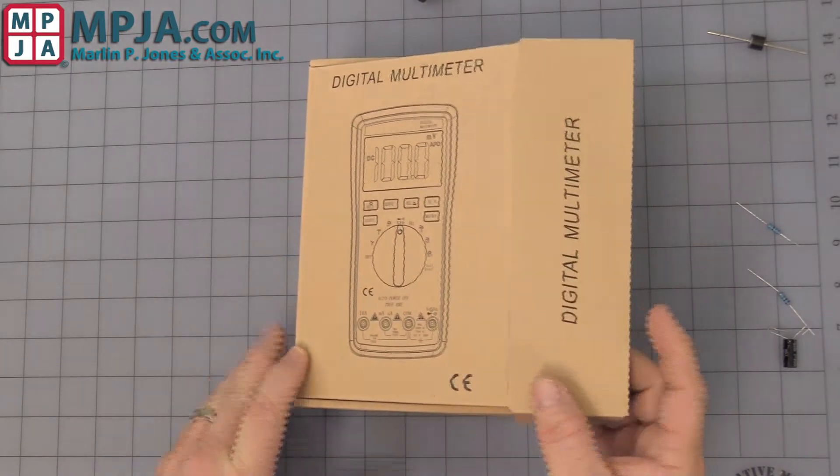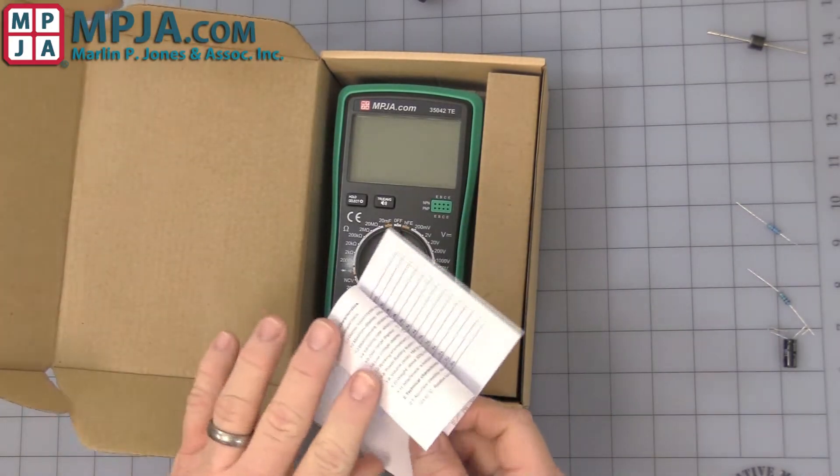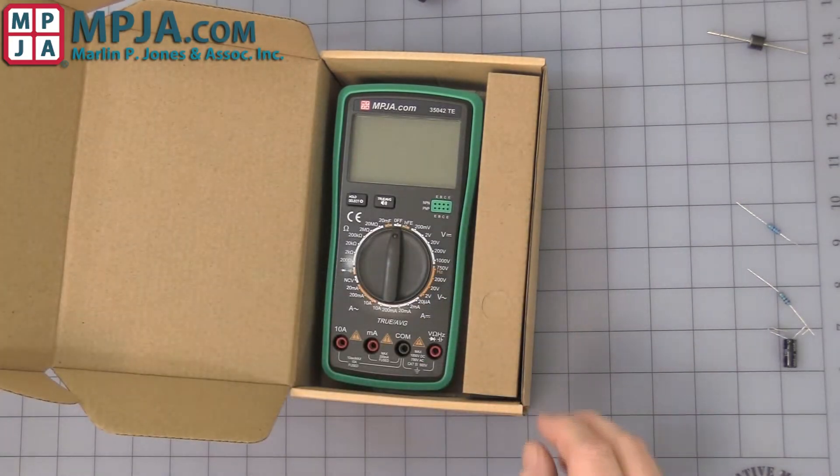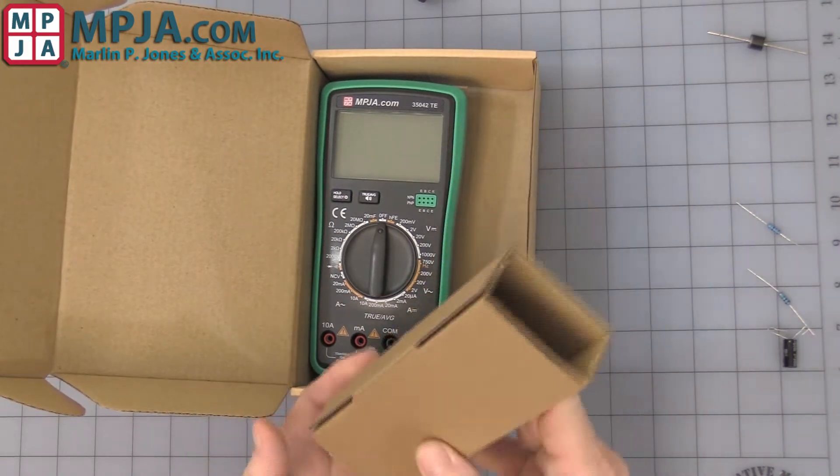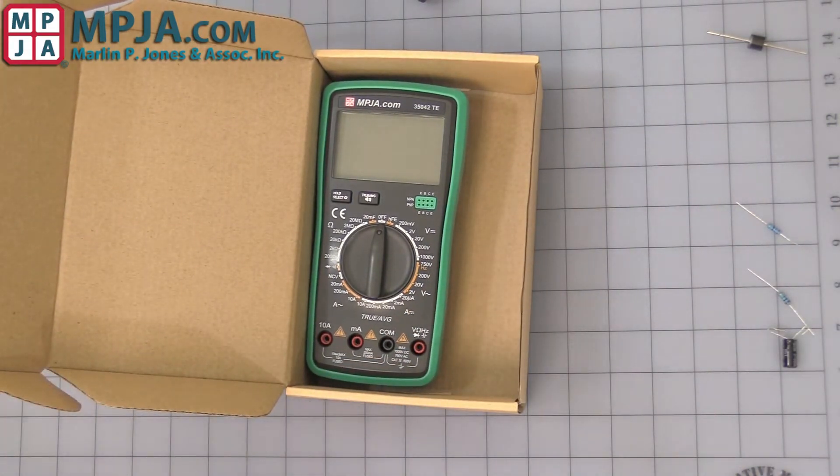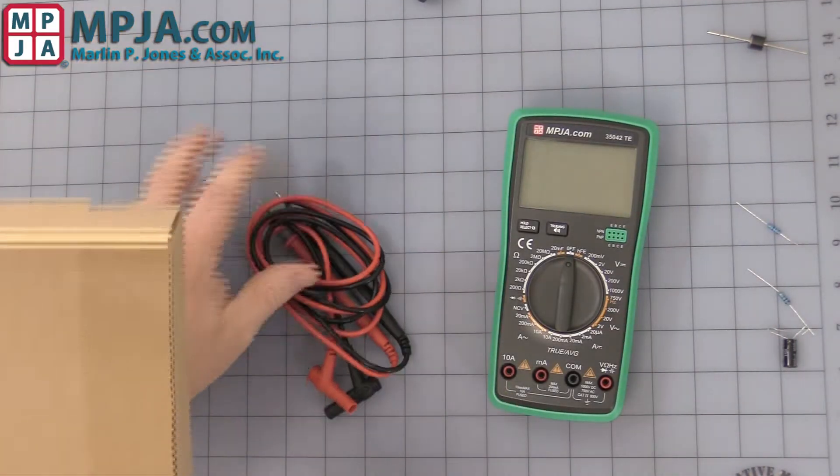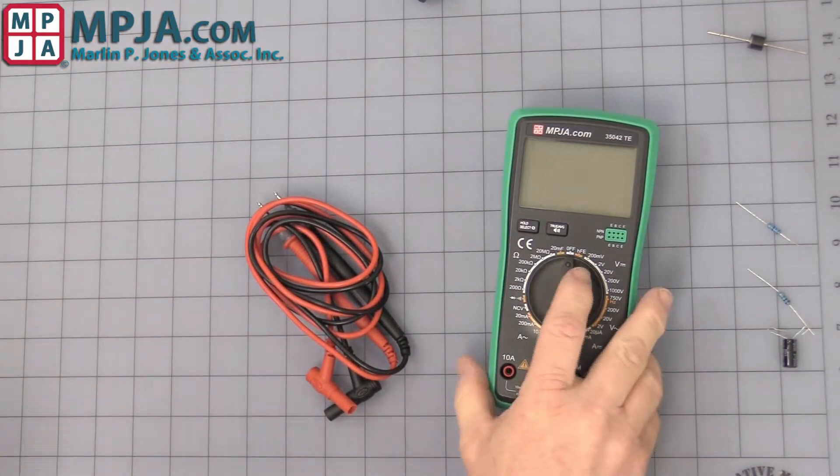First off, it comes in a nice little cardboard box with a multi-page manual. It comes with the test leads and a little 9-volt battery, but I've already gone ahead and installed it in the meter just to save us time.